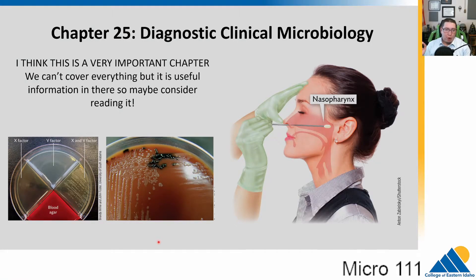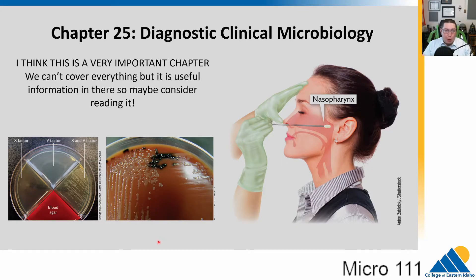In chapter 25, we are finally going to talk about diagnostic clinical microbiology, which is really cool because it ties together all of the concepts we've been talking about into ways that we can identify and grow microbes. It uses all the concepts we've talked about to identify what microbes people have and ultimately give them something to help. This is a really important chapter, and if you're interested, the textbook is a great resource.